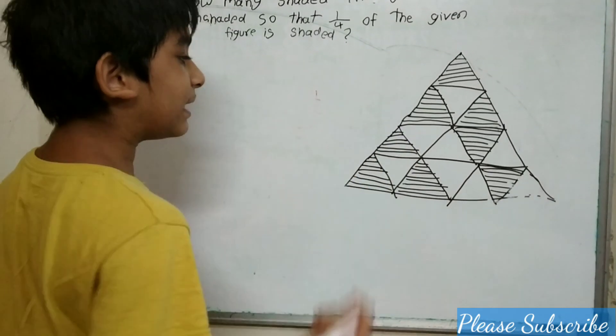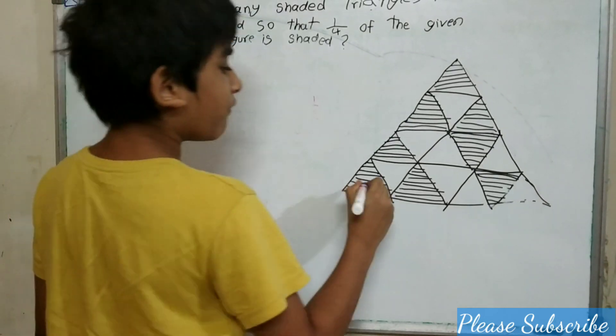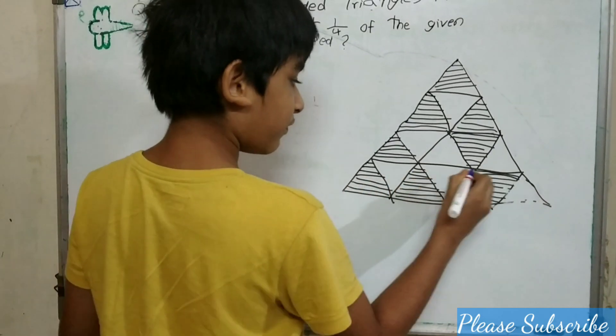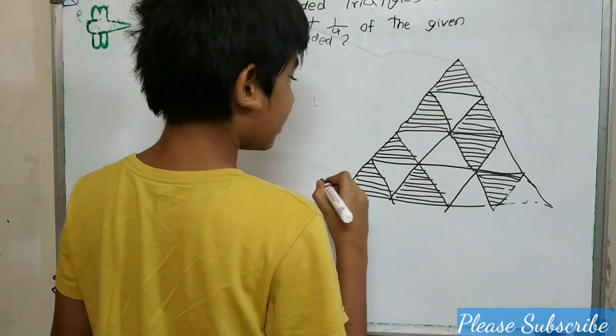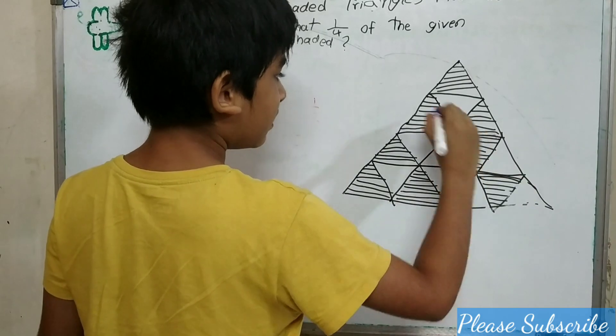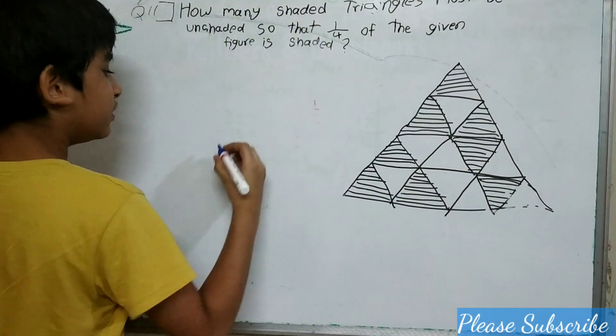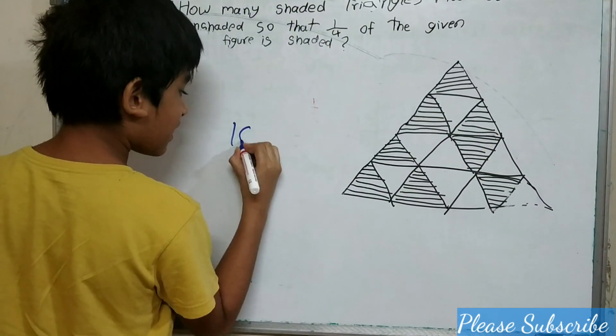First we will find how many triangles are there in this figure: 1, 2, 3, 4, 5, 6, 7, 8, 9, 10, 11, 12, 13, 14, 15, and 16. There are 16 triangles.